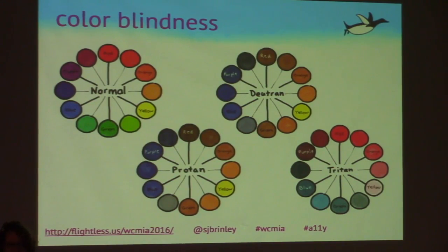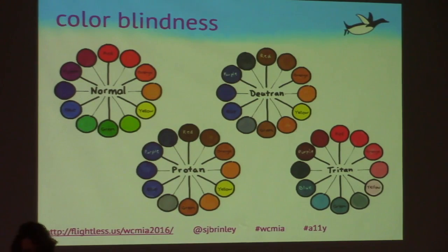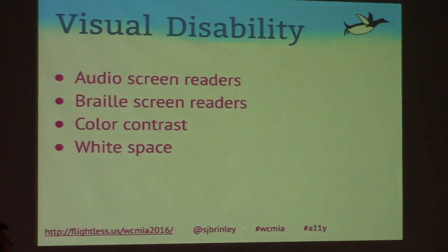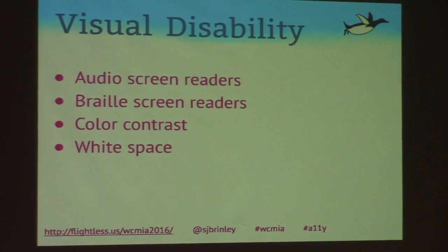There's also color blindness: about 8 to 10% of all men are color blind, while only about 0.5% of women are color blind due to genetics. The three main types are deuteranopia, protanopia, and tritanopia. Ways to assist people with visual disabilities include audio screen readers, braille screen readers, color contrast, and white space.